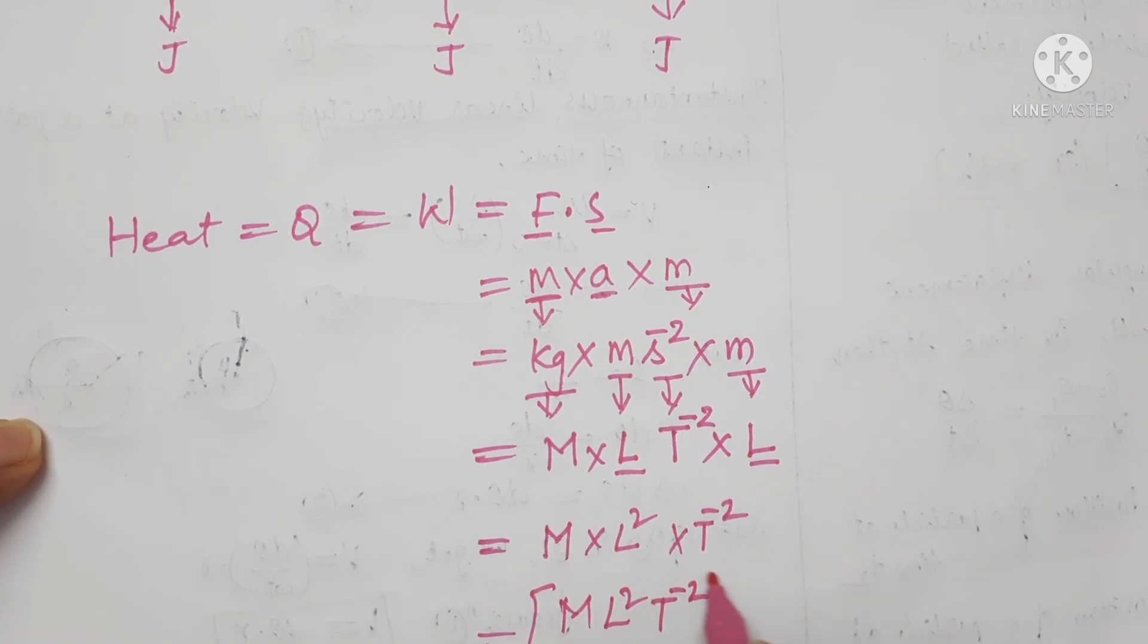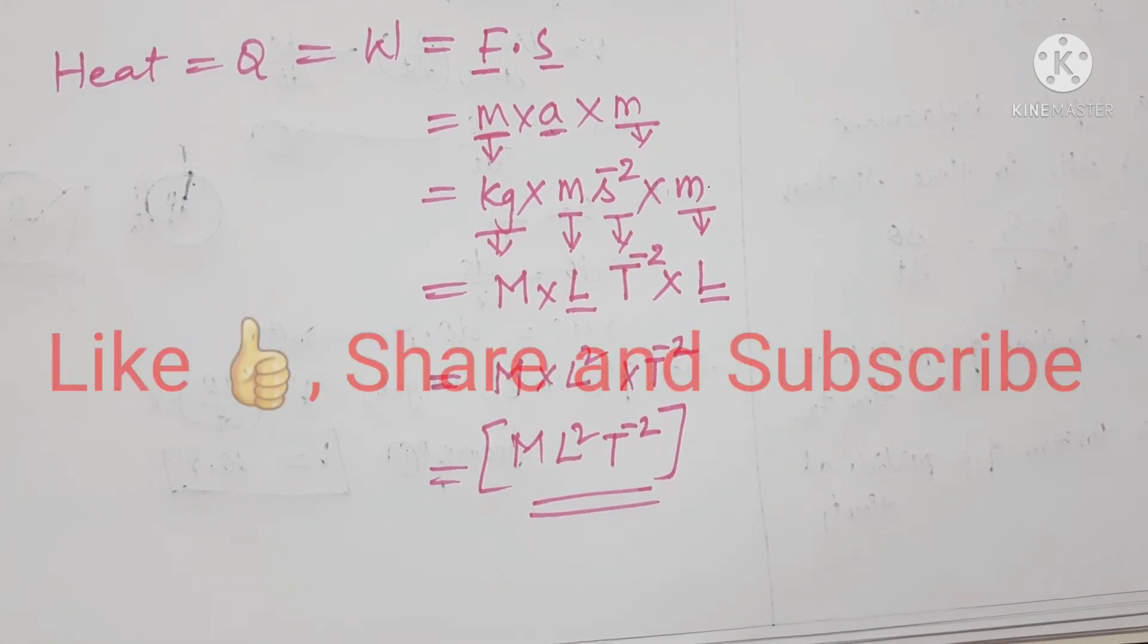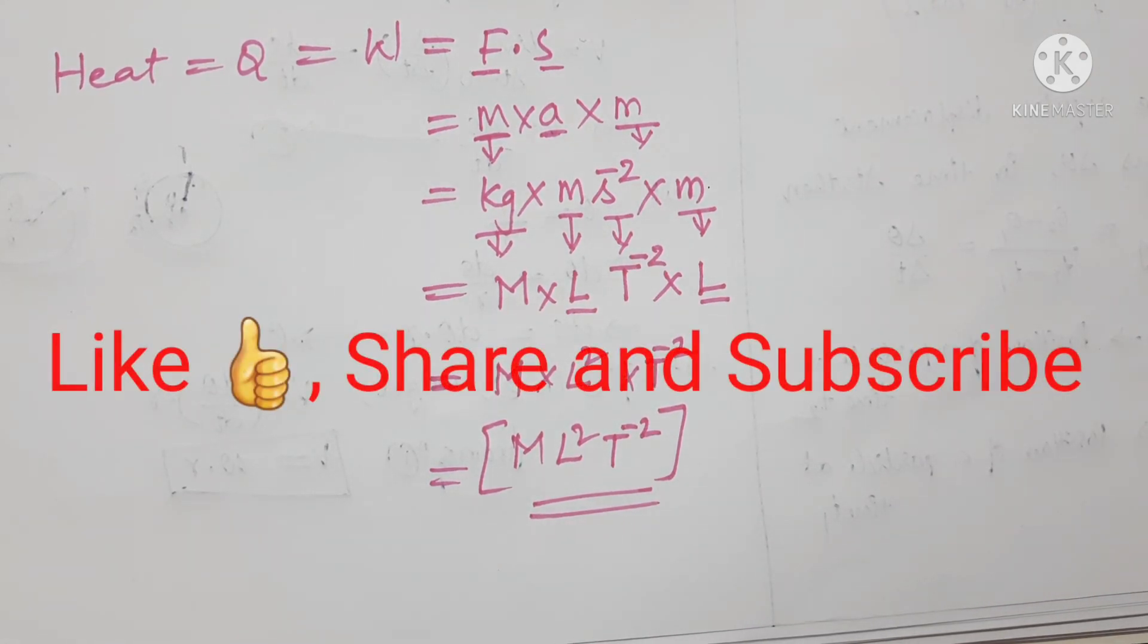Again I am writing M L square T power minus 2. This is the dimensional formula for heat energy. If you like the video don't forget to subscribe the channel and share with your friends.